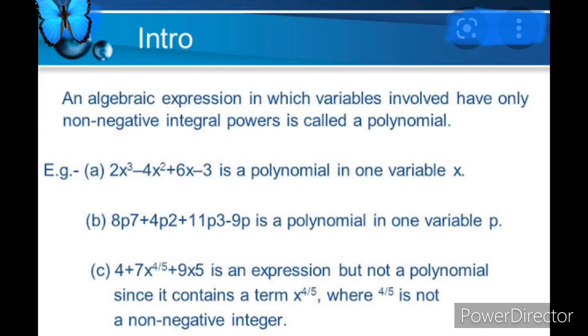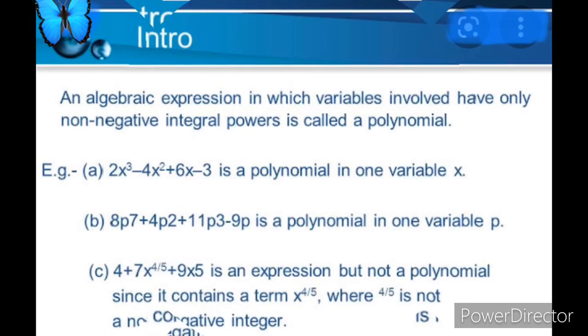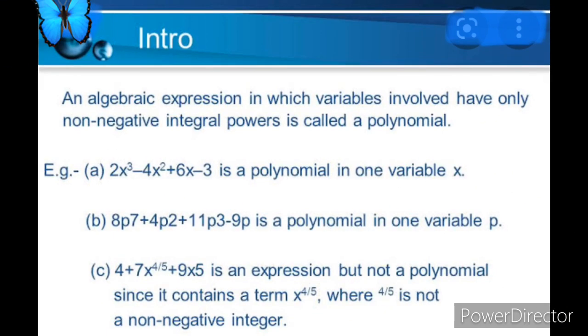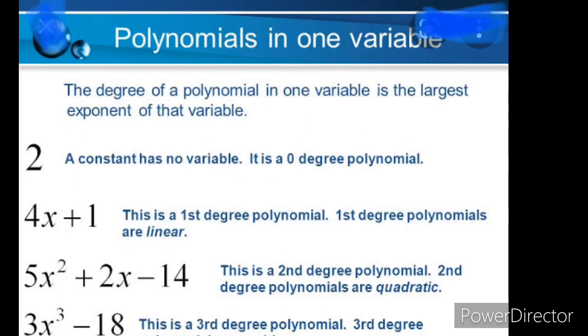See the next one. What is this polynomial called? Which expression is called polynomial? An algebraic expression which involves only non-negative integral powers is called a polynomial. You can see a, b is a polynomial, and c is not a polynomial. The degree of a polynomial in one variable is the largest exponent of the variable. 2 is here constant, students.